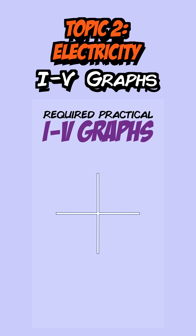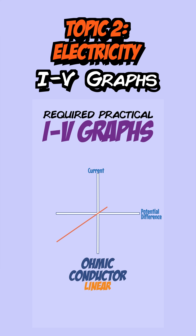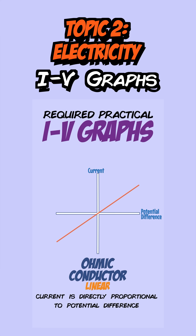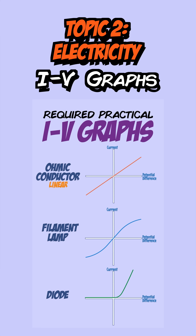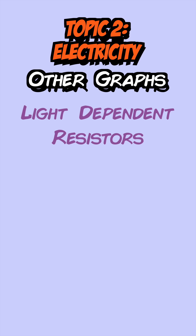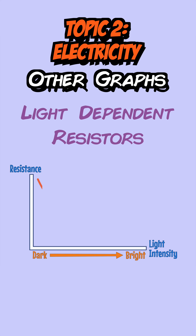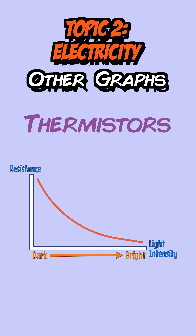You're now ready to plot a graph of current against potential difference. If a resistor is connected, you get a linear graph — a straight line through the origin — meaning current and potential difference are directly proportional. If a filament lamp or a diode is connected, you get non-linear shapes, showing they are both non-linear components. Other graphs include the one for light-dependent resistors, where resistance decreases as light intensity increases, and thermistors, where resistance decreases as temperature increases.